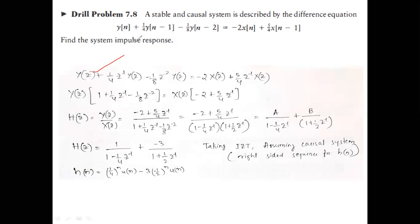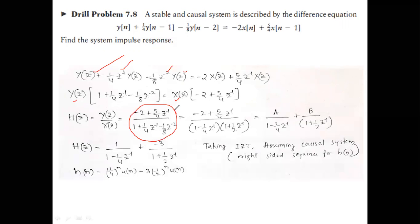Instead, we work in the Z-domain. Take the Z-transform: y(n) → Y(z), the (1/4)y(n−1) term becomes z⁻¹·Y(z), y(n−2) becomes z⁻²·Y(z), x(n) becomes X(z), and (5/4)x(n−1) becomes z⁻¹·X(z). Collect Y(z) and X(z) terms, then H(z) = Y(z)/X(z). The tricky part is how to split the resulting expression.